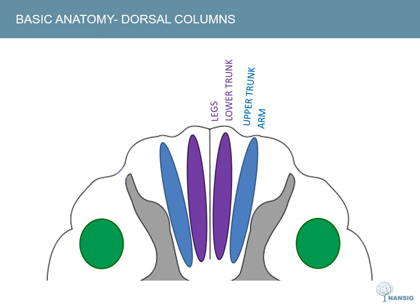These two main pathways have different names. More medially you have the gracile — meaning thin — fasciculus, and laterally you have the cuneate, or wedge-shaped, fasciculus. Remember that sensory information from the upper body isn't incorporated until the thoracic spinal cord, so the cuneate fasciculus does not exist below around T6. That means the lumbar cord has a narrower diameter than the cervical cord.